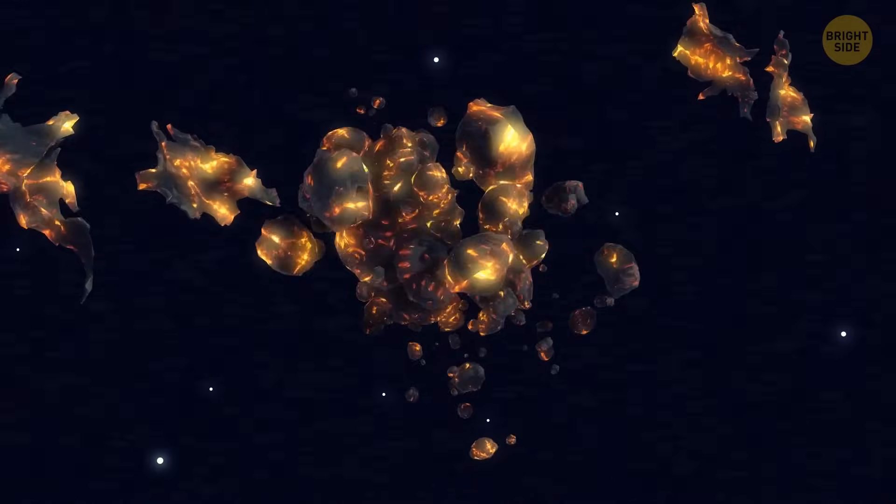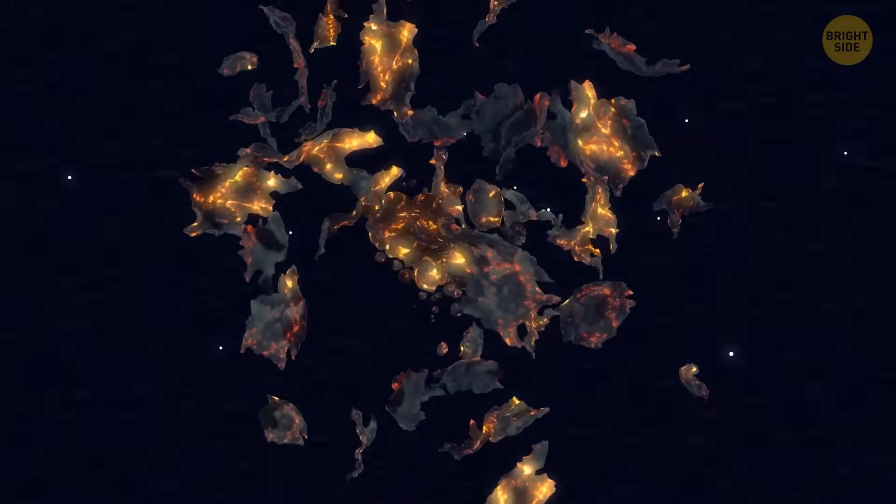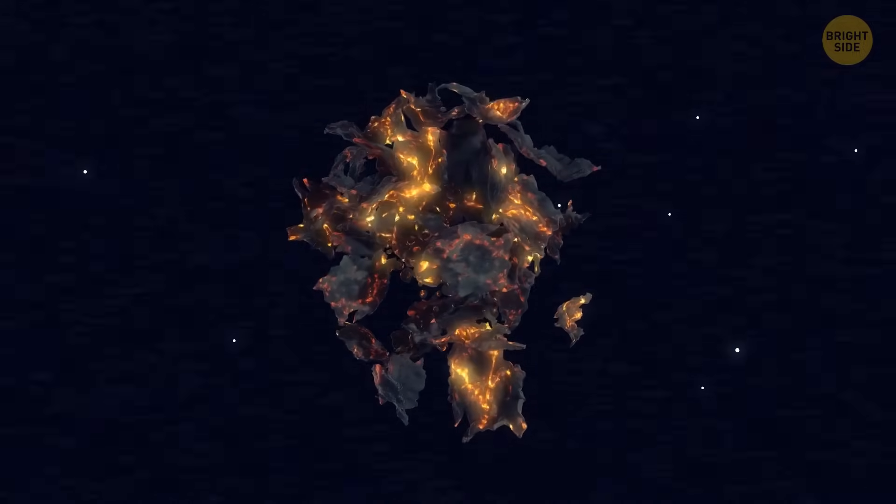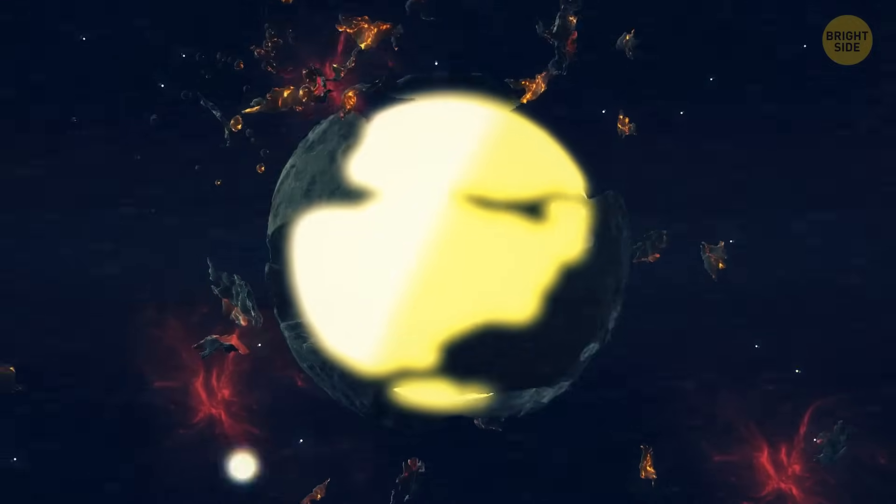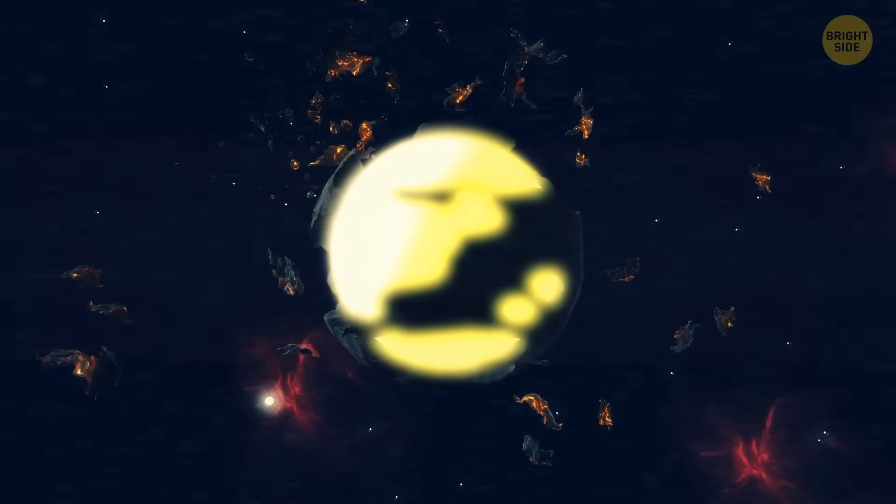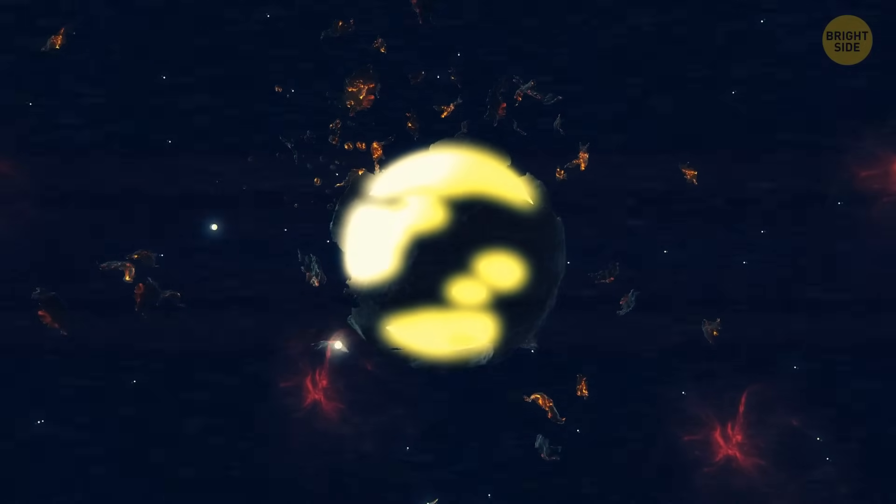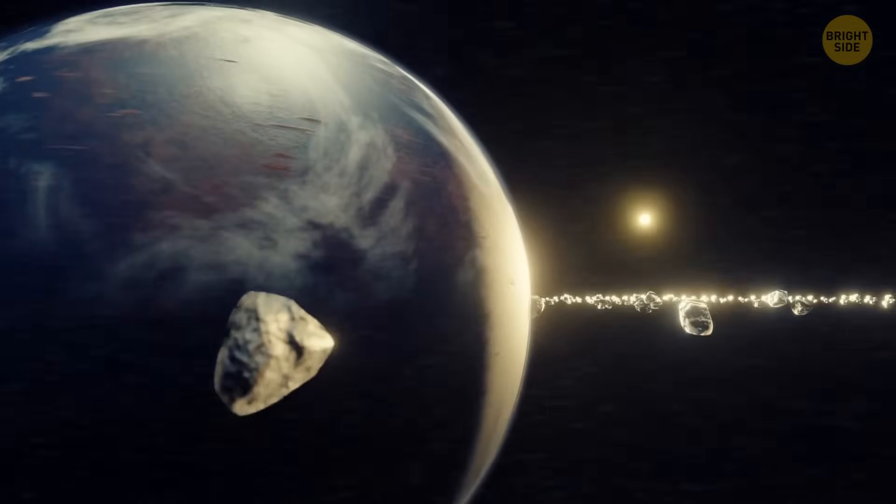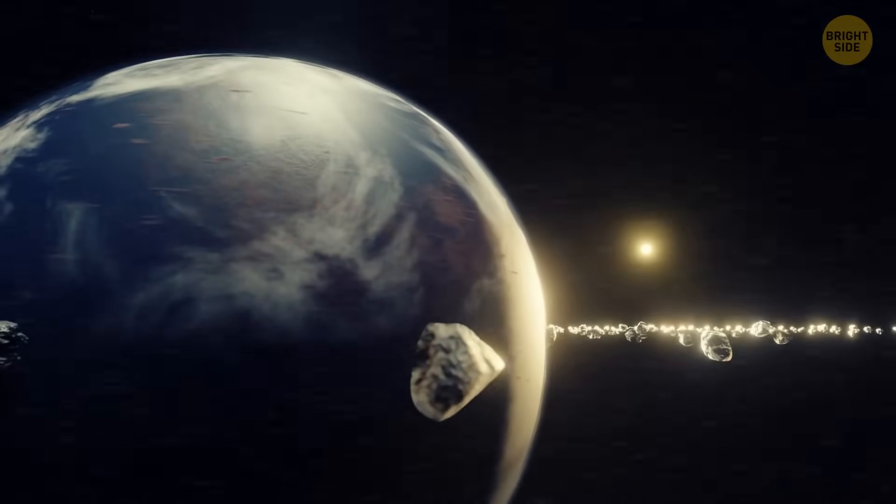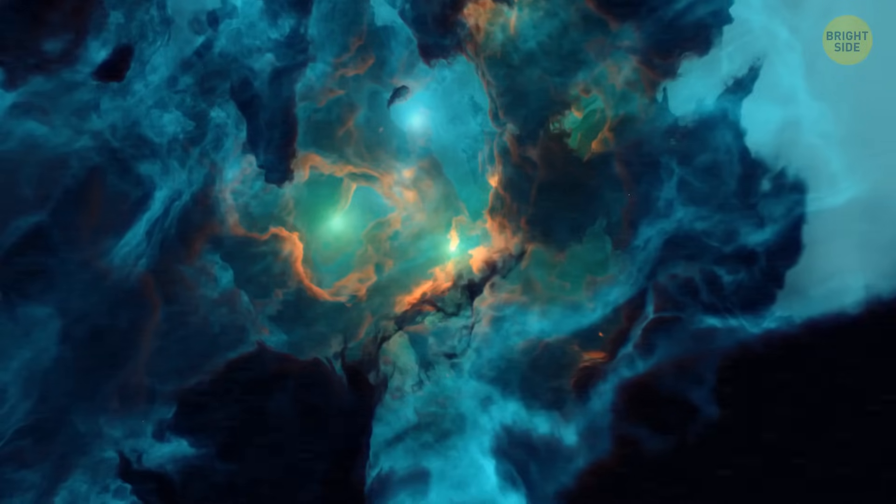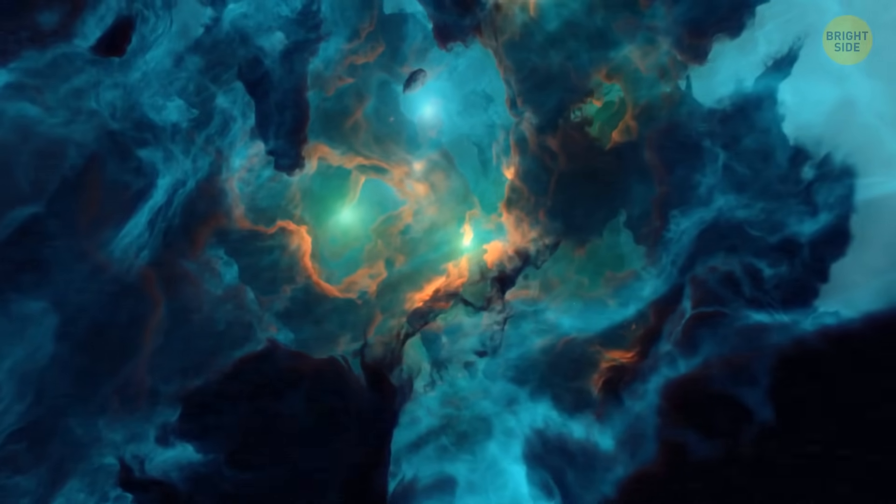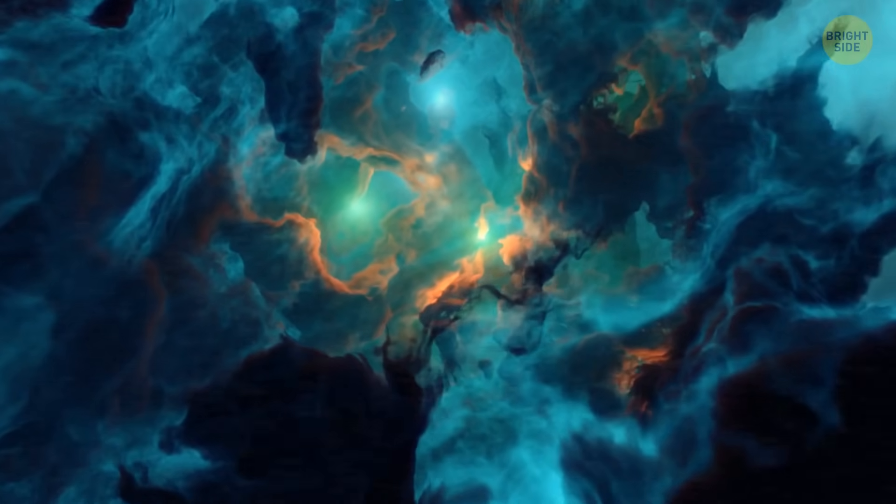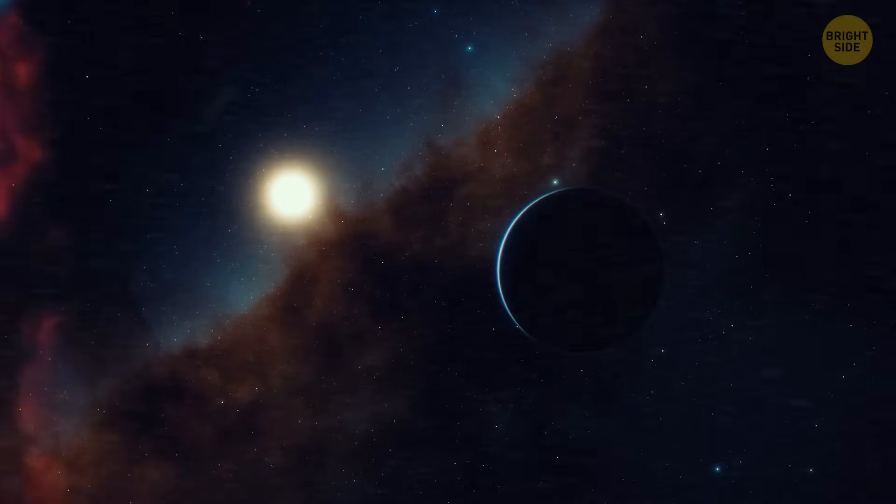And as the planetesimals continued to collide and merge, they grew larger and larger, forming protoplanets. The protoplanets were getting serious about their size, and their gravity became stronger. Some of them got so massive that they became the grand masters of their cosmic neighborhoods, the planets we know and love. Each planet had its own unique recipe of gases, rocks, and sometimes even water.